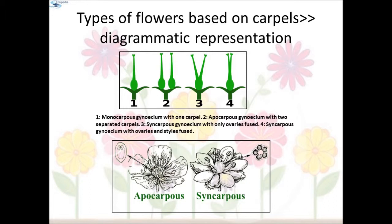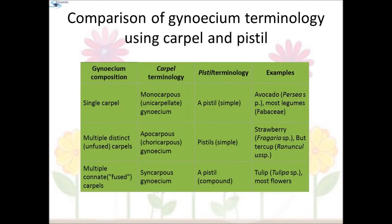Here you can see a picture of an apocarpous flower and a syncarpous flower. In the apocarpous flower the pistils are free, while in the syncarpous flower they are fused together to form a single unit.